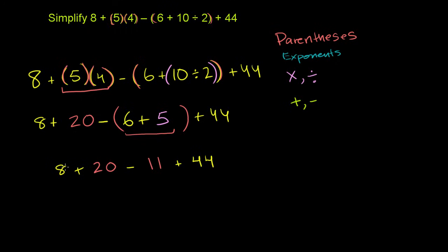So you could view this as 28 minus 11 plus 44. 28 minus 10 would be 18, so this is going to be 17. It's going to be 17 plus 44.